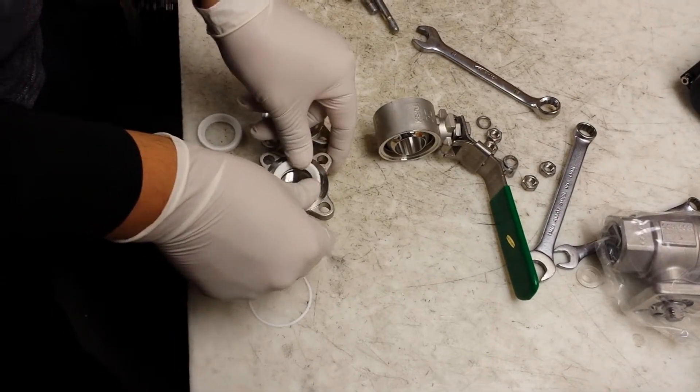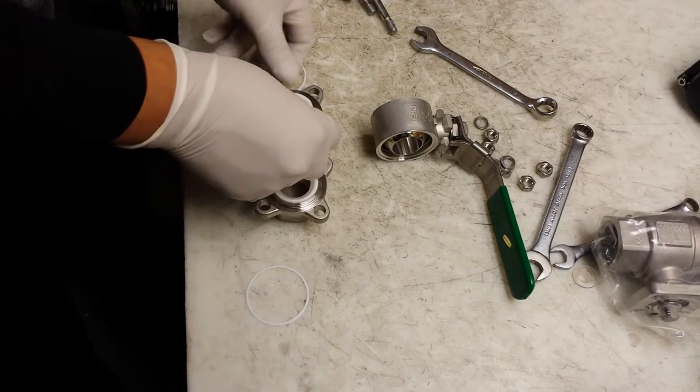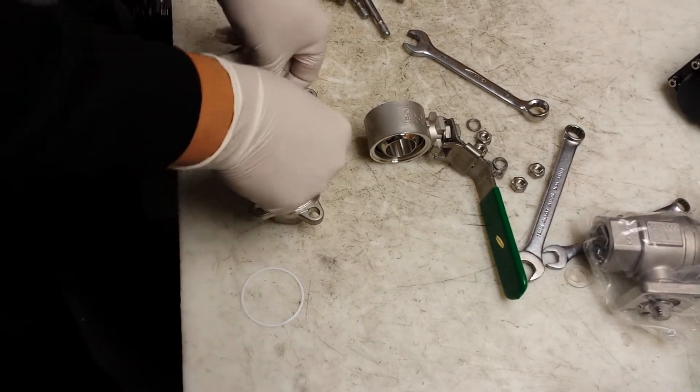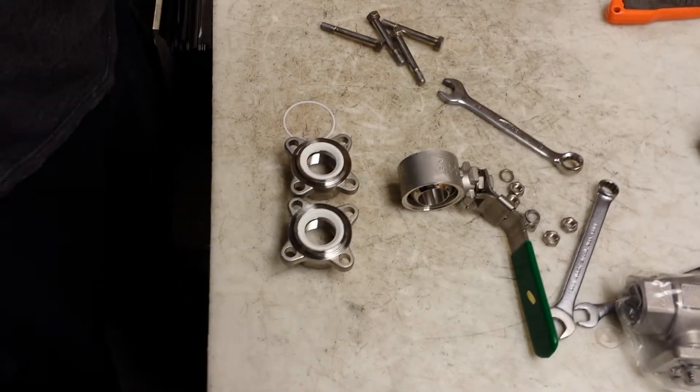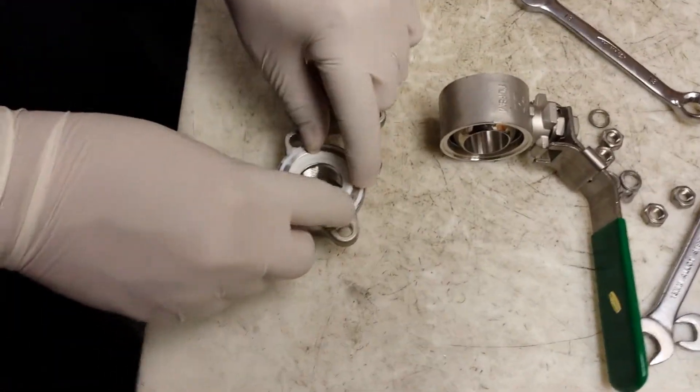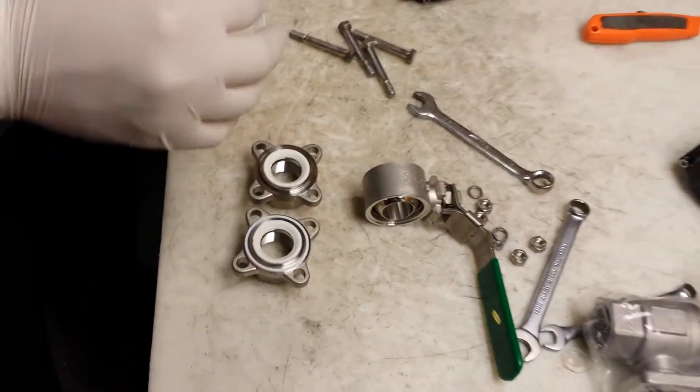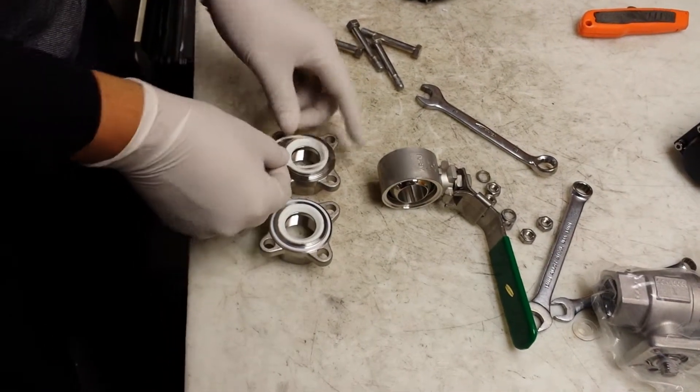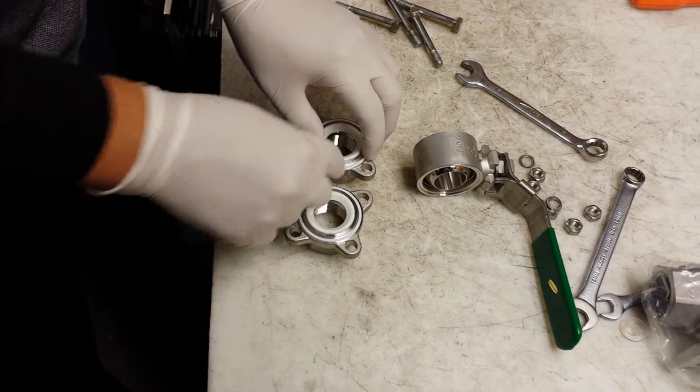Here David is putting in the new seat into the end caps. And then he's going to place the body seal and make sure it goes all the way around the second lip of each end cap. He's pressing it all the way around.